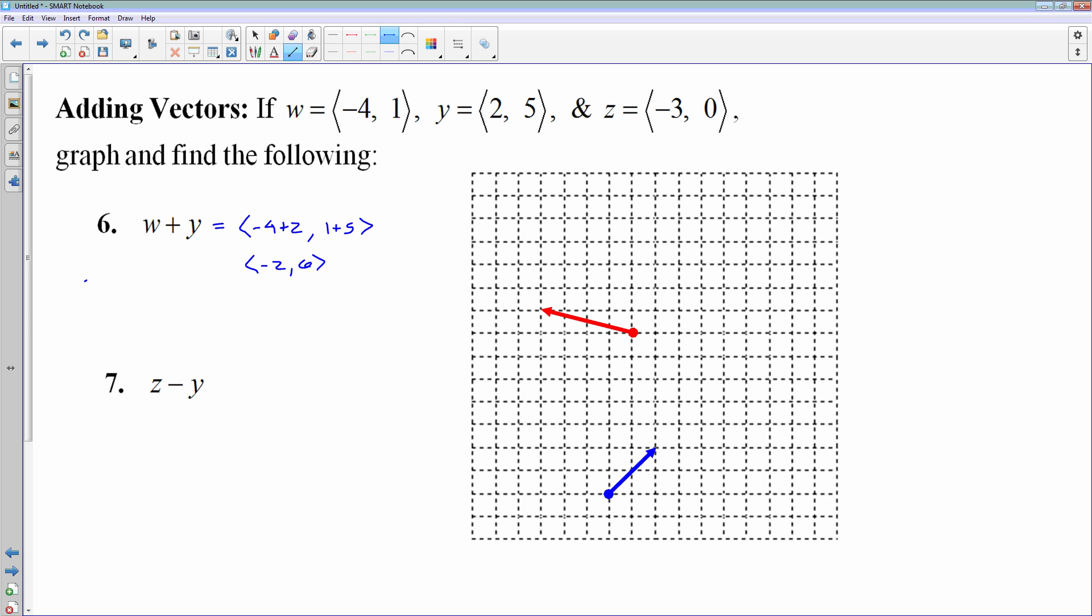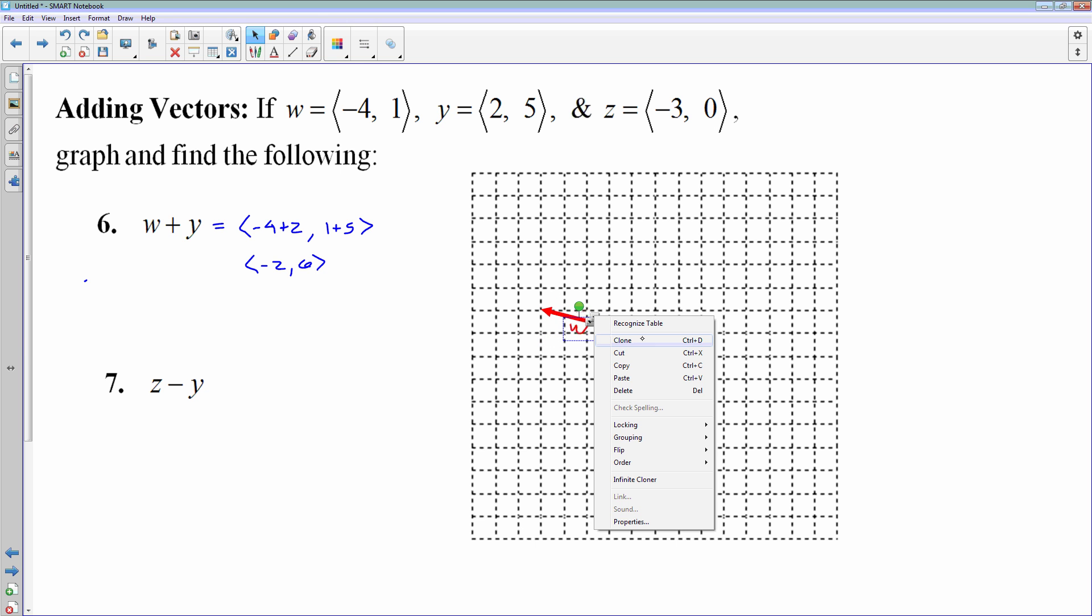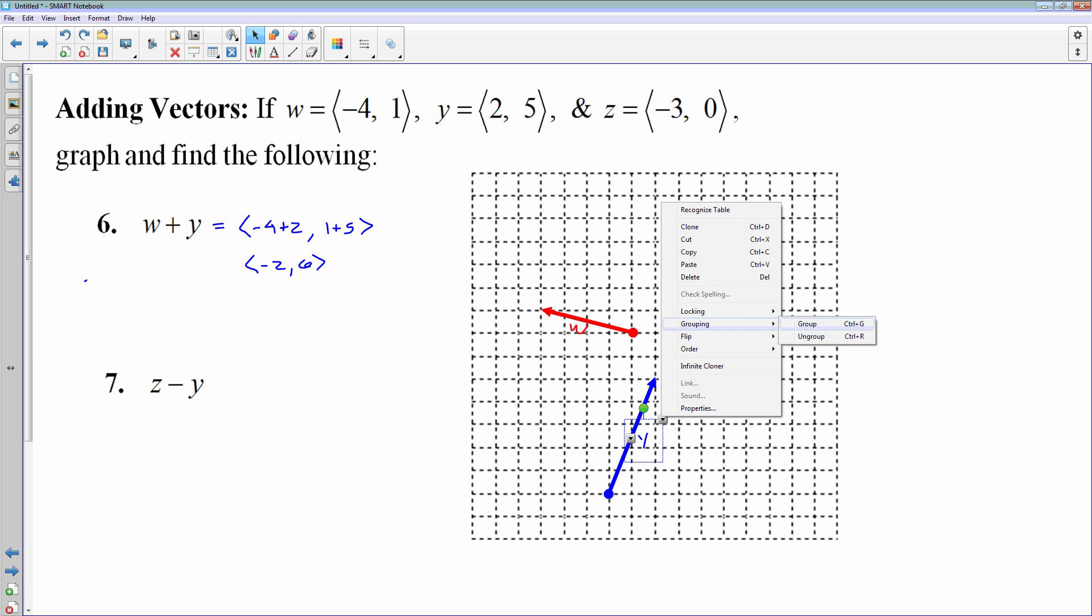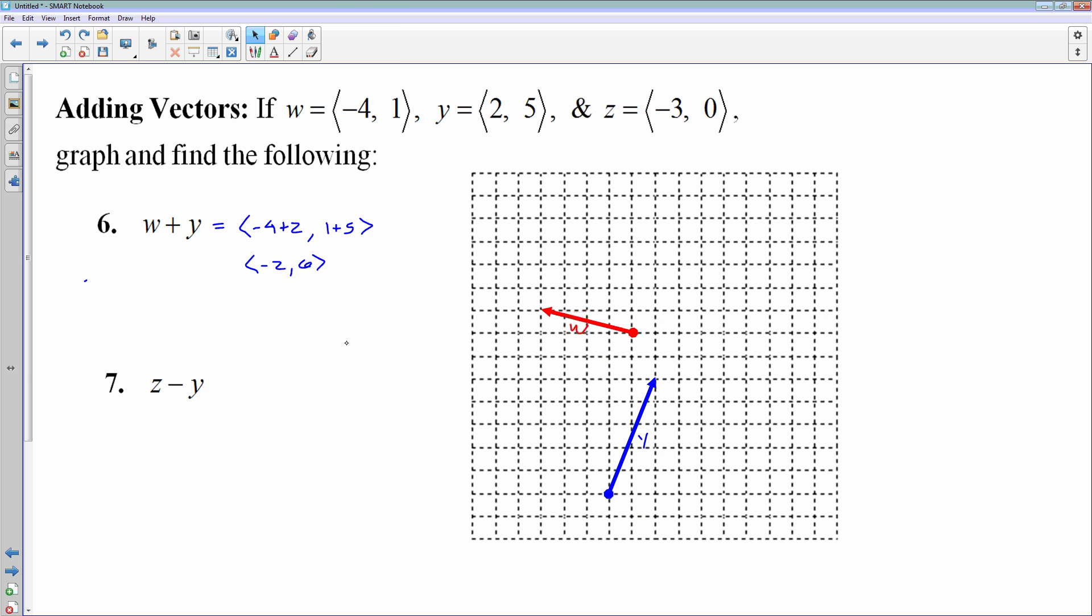So this is my vector w. This is my vector y. If you want to do w plus y, that means you start with w and you graph it first. So I'm graphing w. And then I have y graphed. And then to do w plus y, you take the y vector and you put it on the end of the w vector right there.